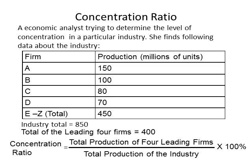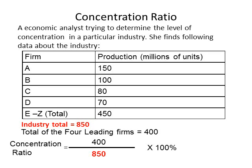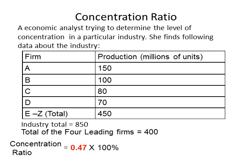The next step is to calculate the concentration ratio by dividing the total production of the leading four firms by the total production of the entire industry, then multiplying by 100%. The four leading firms produce 400 million units and the entire industry produces 850 million units. Dividing 400 by 850 gives 0.47, and multiplying by 100% gives a concentration ratio of 47%.